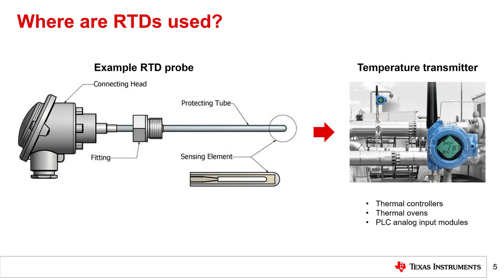RTDs can be used in medical, automotive, and aerospace applications as well. In all cases, the ADC measures the analog temperature reading and converts it to a digital output code. The system controller then converts this output code to a temperature. The next slide discusses two methods for converting a measured RTD resistance to temperature.